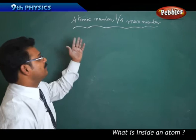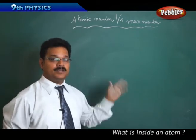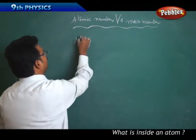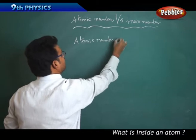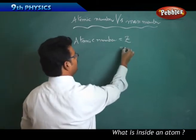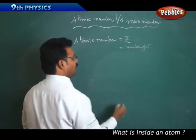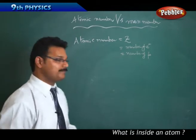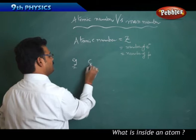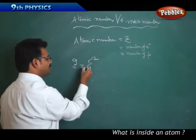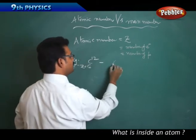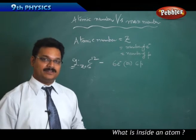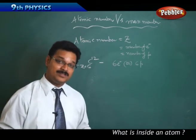Now let's look at atomic number and mass number. Atomic number is represented by the symbol Z, and it is the number of electrons or the number of protons. For example, carbon C-6-12 has Z equal to 6, meaning six electrons and six protons. For nitrogen N-7-14, the atomic number is 7, meaning seven electrons and seven protons.